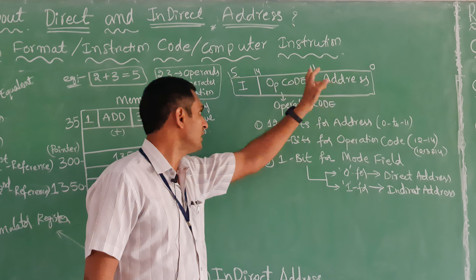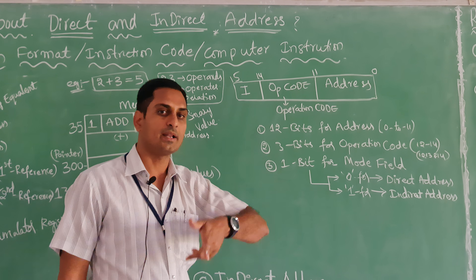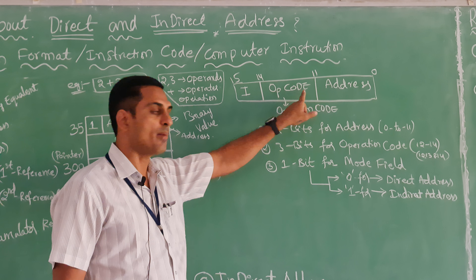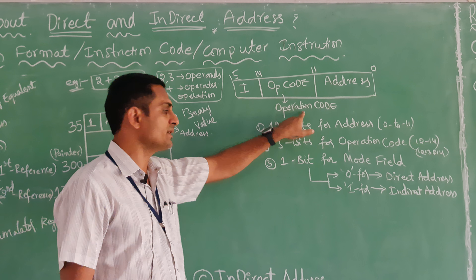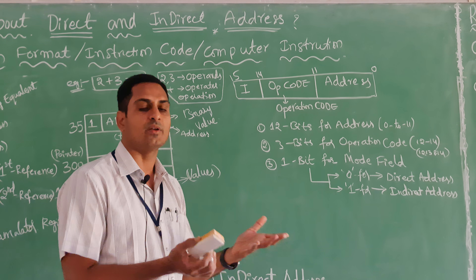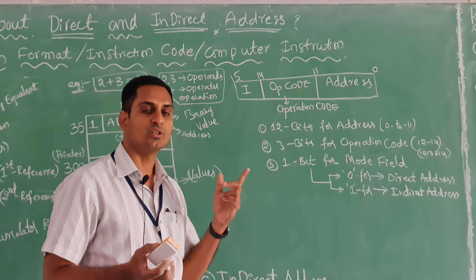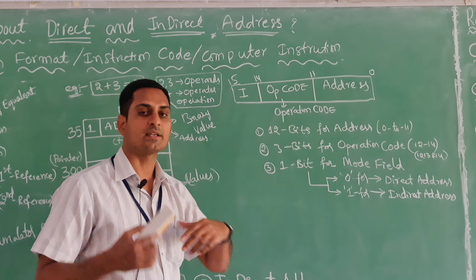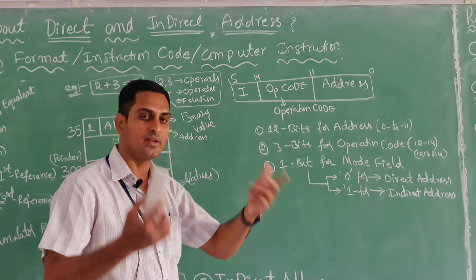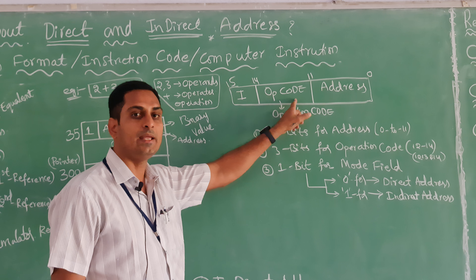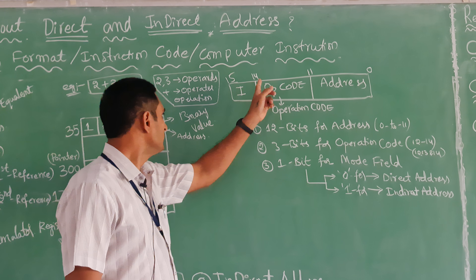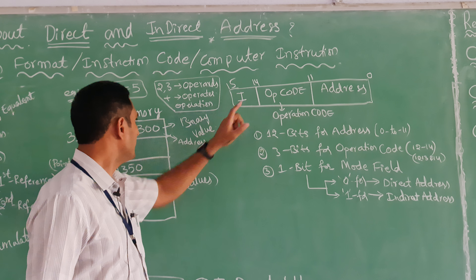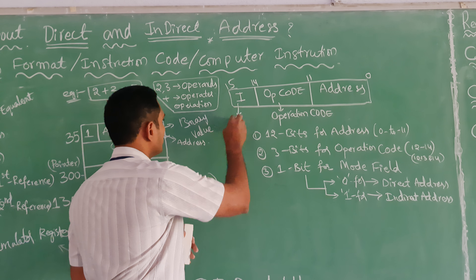The first field is the address field: bits 0 to 11, which means 12 bits for the address. The second field is the op code — operation code — which decides what operation to perform, whether the ALU should perform addition, subtraction, multiplication, or division. This is 3 bits, from bits 12 to 14. The third field is the I bit.